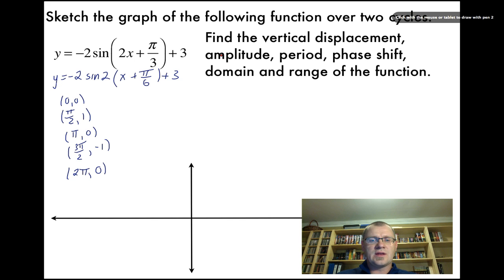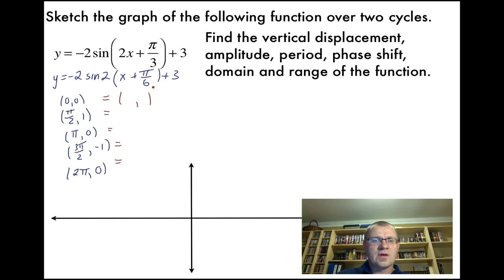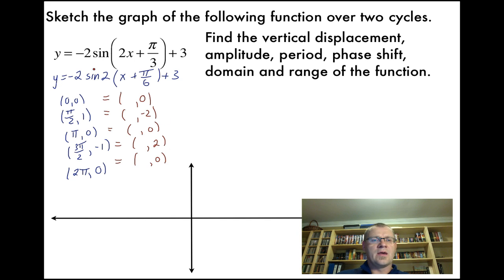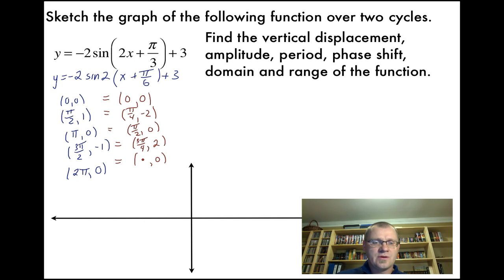We apply the vertical and horizontal stretches first. The a value is −2, so we multiply all y-values by −2. For the b value, remember it's the opposite of what you'd expect — our x-values are divided by 2, not multiplied. So: 0 stays 0; π/2 becomes π/4; π becomes π/2; 3π/2 becomes 3π/4; and 2π becomes π.